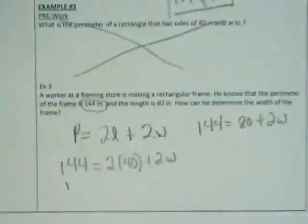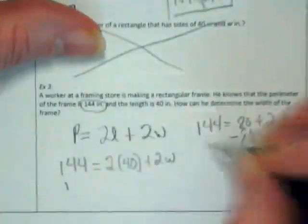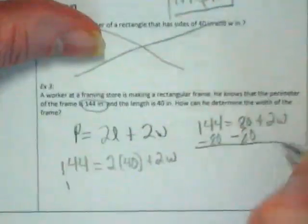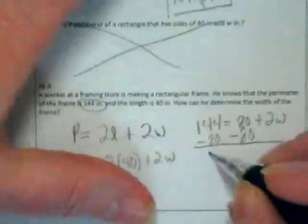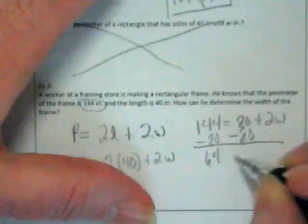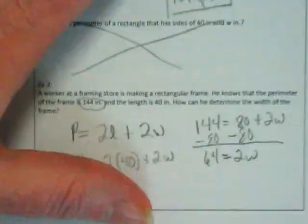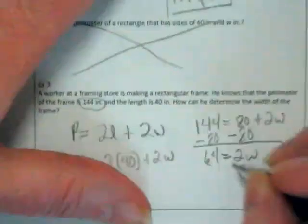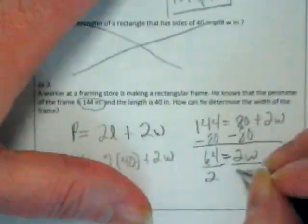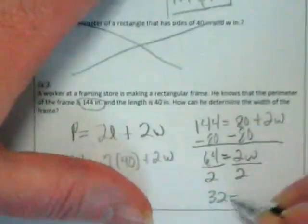Next step. Subtract 80. Which I did this with a calculator last night, so I'll give you guys the benefit. It's 64 is equal to 2W. What's our next action? Divide by two. Divide by two. I'm still seeing a couple people with dry erase markers. I need them put away. 32 is equal to the width.